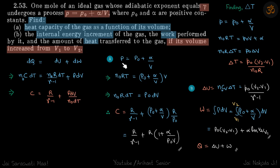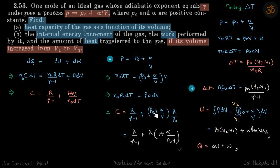We write p = n₀RT/V and differentiate that equation to get dV/dT. Substituting that value in, we get C expressed in terms of volume. Since we want heat capacity in terms of volume, we replace p with p₀ + α/V, which gives us the final expression for the heat capacity.